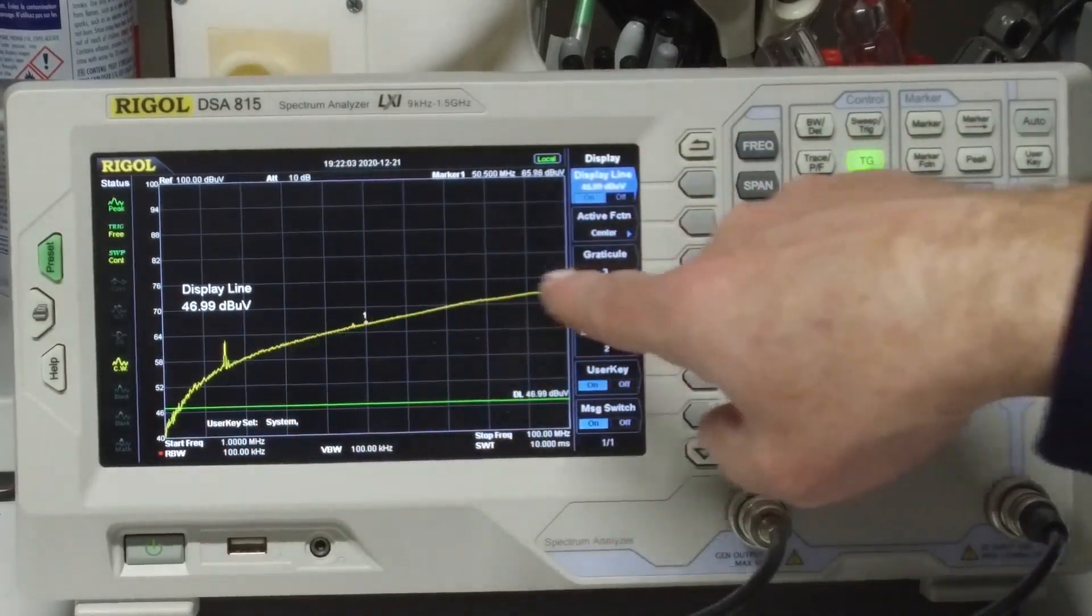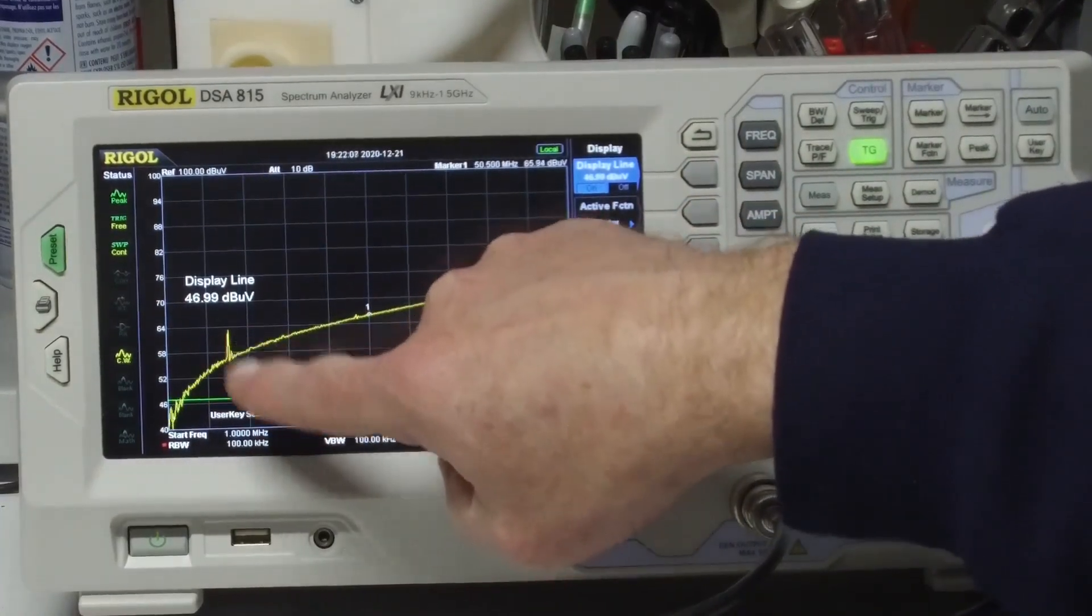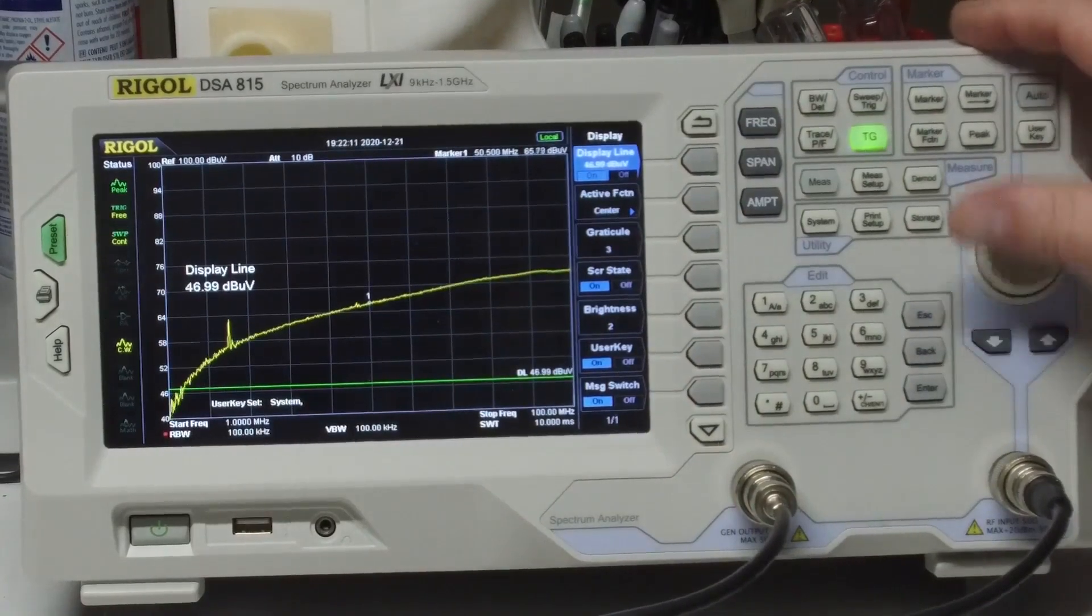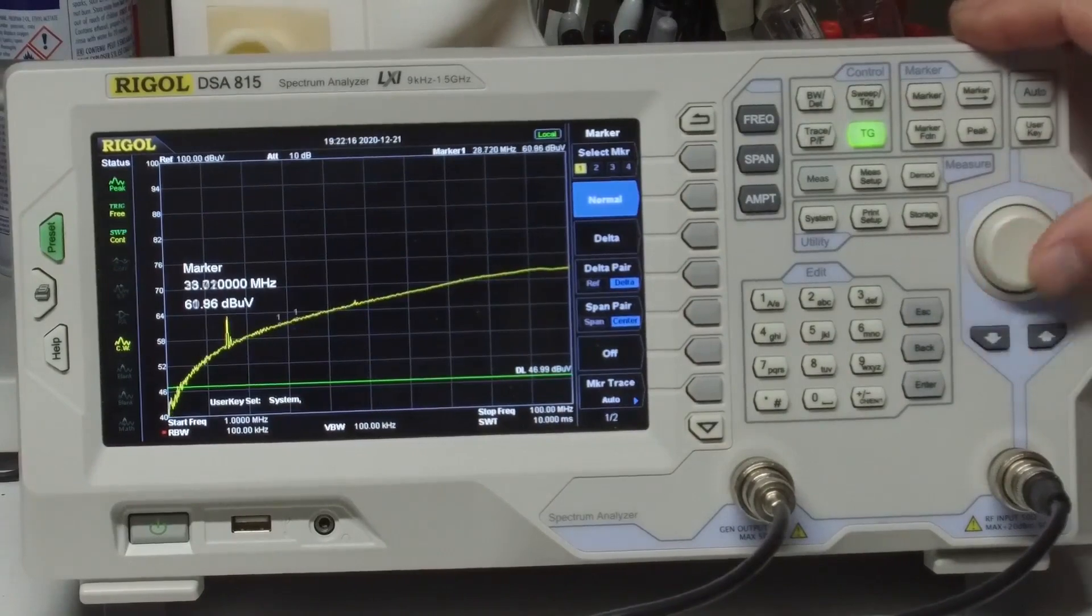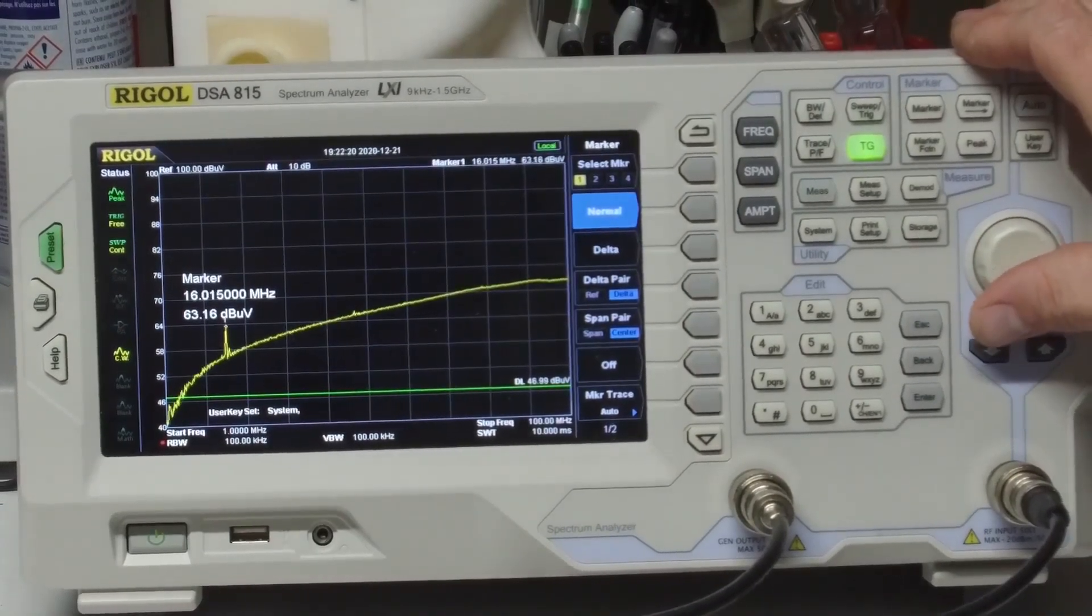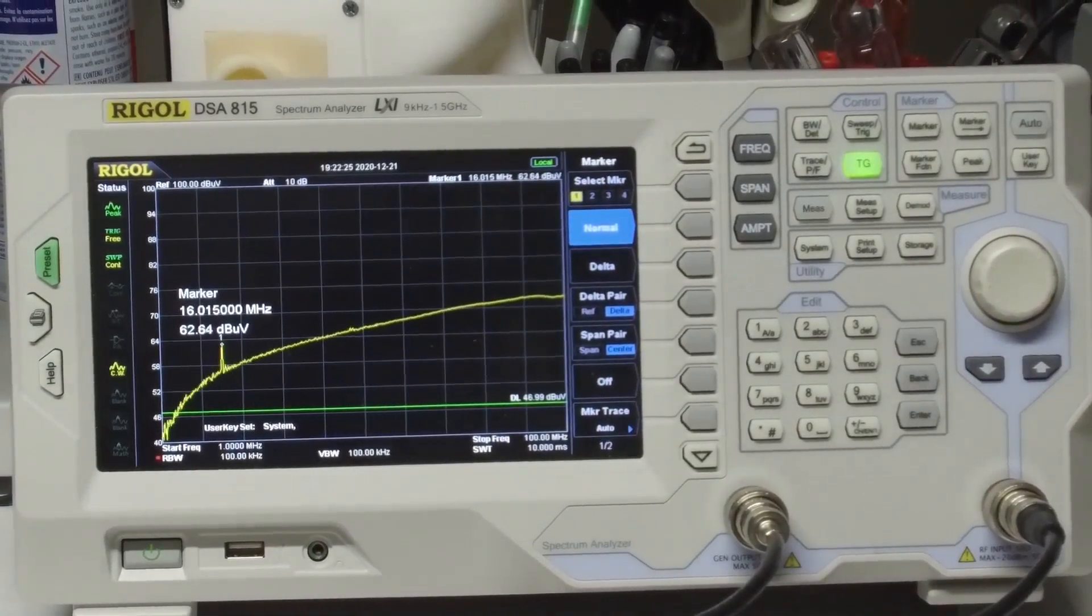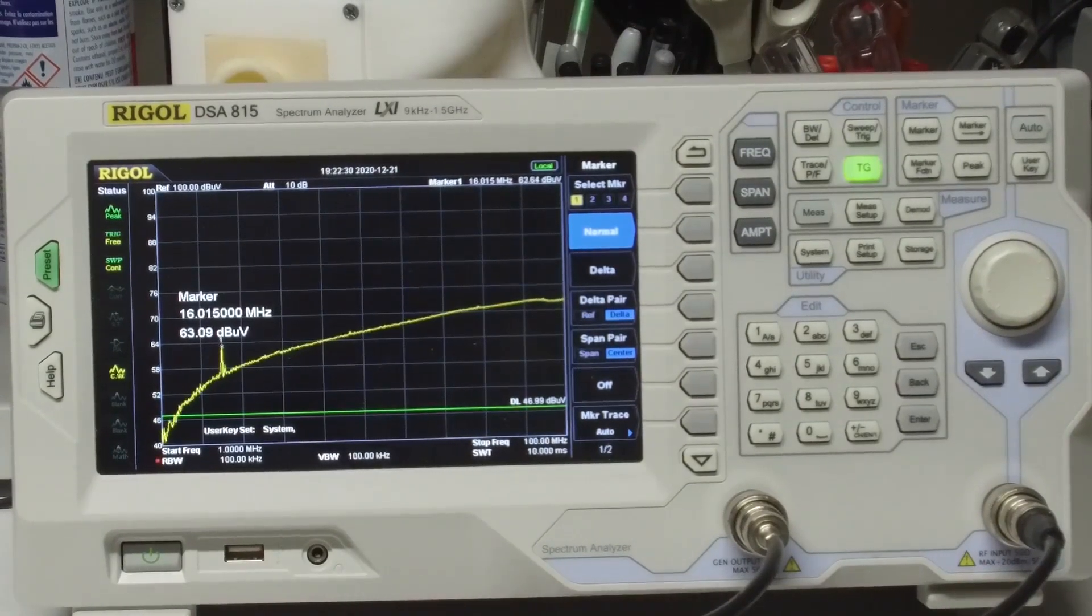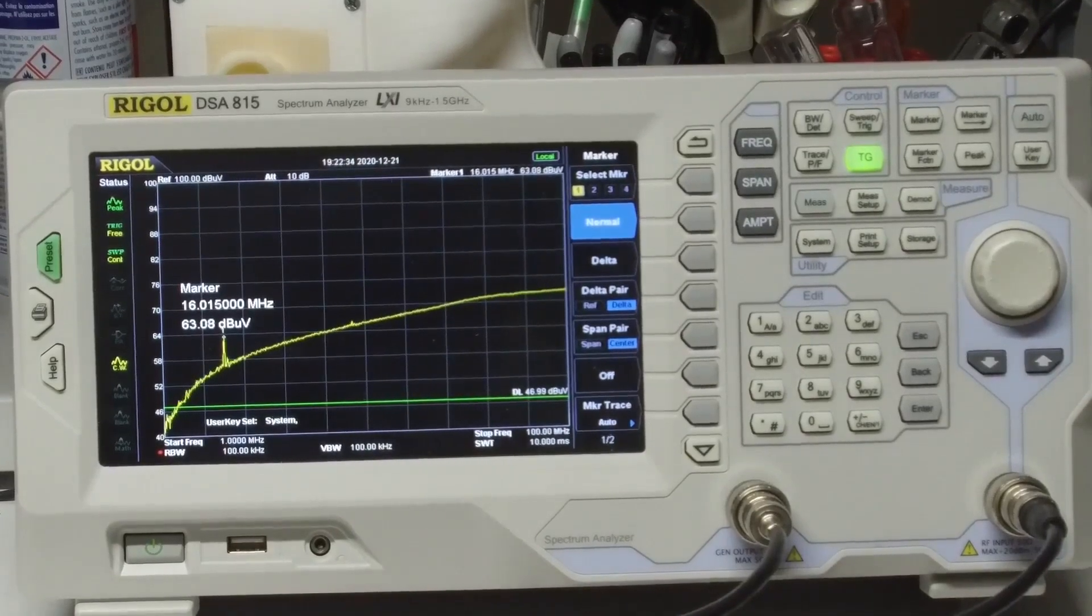So you can look at this frequency response here and we see this little blip right here. That is going to be the resonant frequency of the crystal. So let's move our marker down here. And we can see that this is a 16 megahertz crystal.